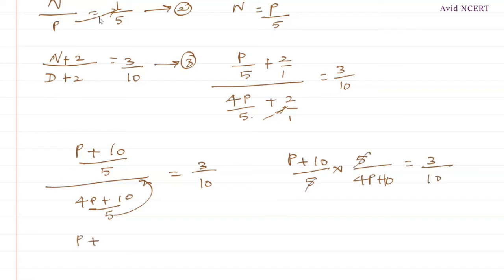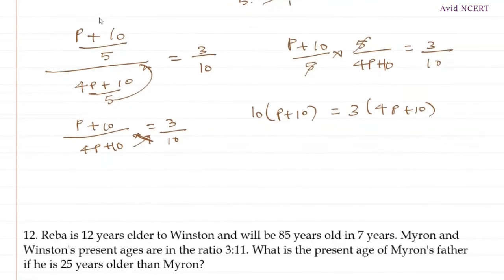So, cross multiplication, 10 times P plus 10 equals 3 times 4P plus 10. So, which is 10P plus 100 equals 3, 4 times is 12P plus 3, 10 times is 30. 100 minus 30 equals 12P minus 10P.